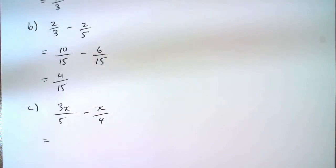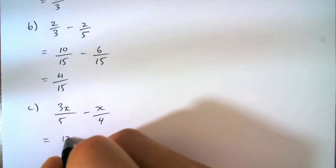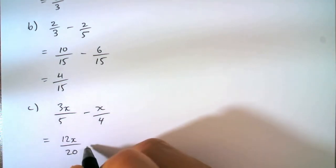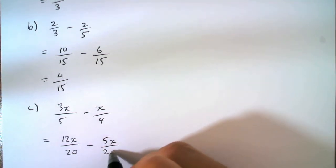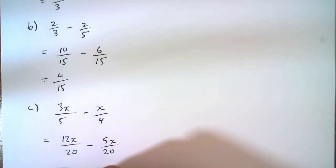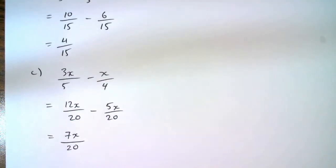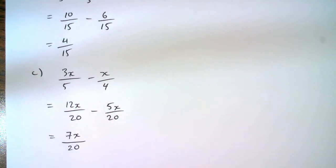So our common denominator is going to be twenty, and subtracting five x from twelve x I get seven x.